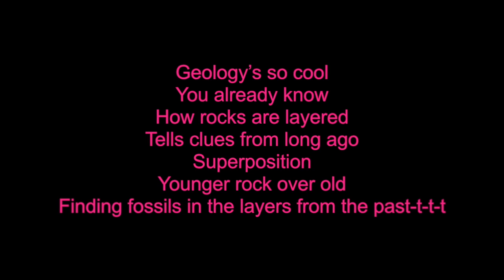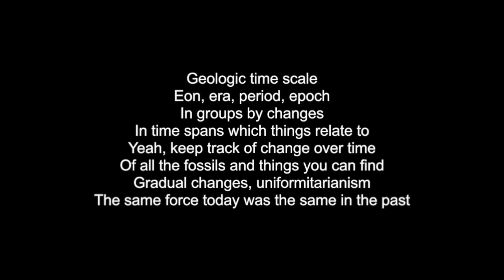How rocks are layered — here's tools from long ago. Superposition: younger rocks on top, older rocks below. Finding fossils in the layers from the past. Geologic time scale — eon, era, period — changes in times, intense things we relate to. Keep track of change over time, all of the fossils and things you can find. Gradual changes — uniformitarianism: the same force today was the same in the past. BOW!